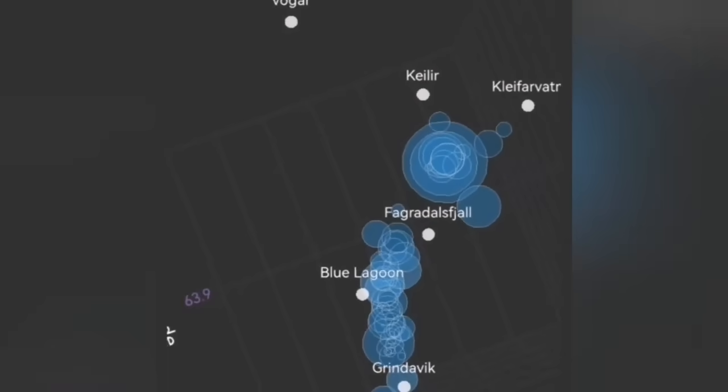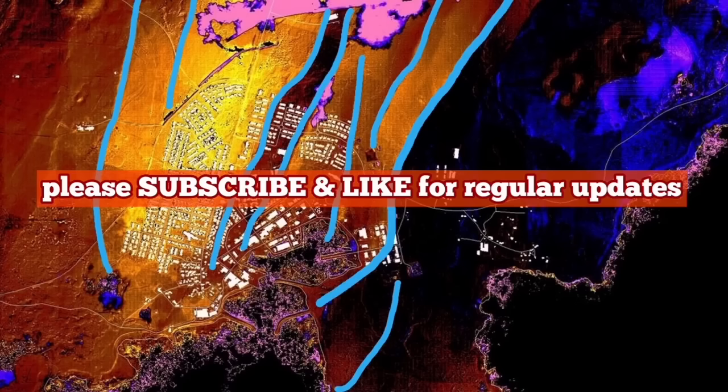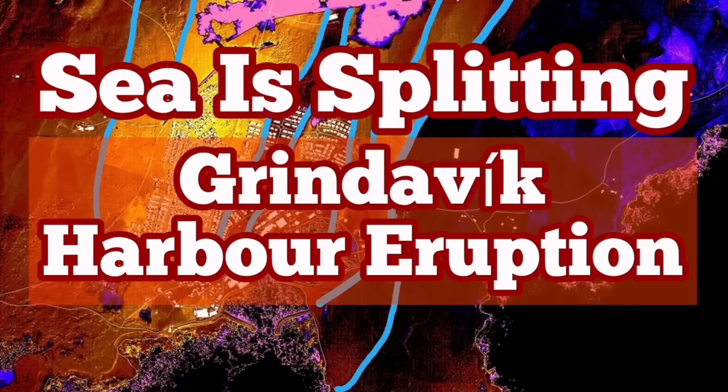Near the Svartsengi we don't have Sundhnúka, we have something. And now off the coast of Grindavik in the ocean, we see the rising of the earthquakes, means the magma is rising with it.